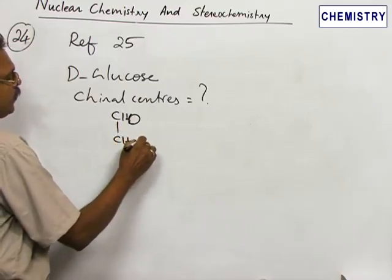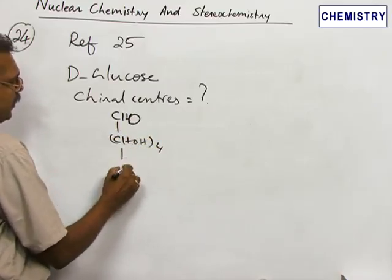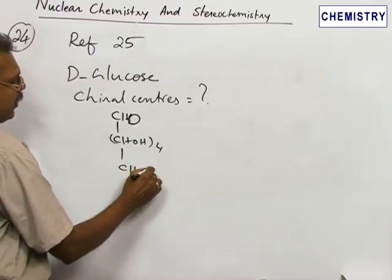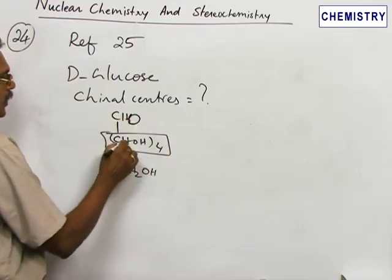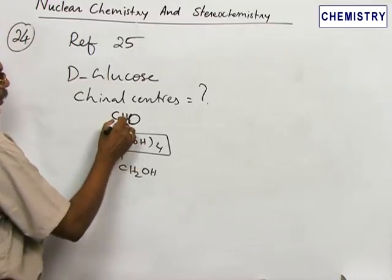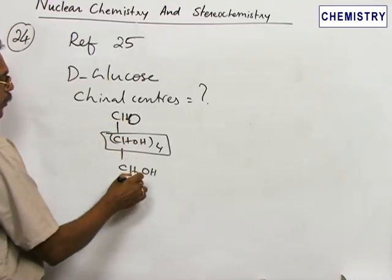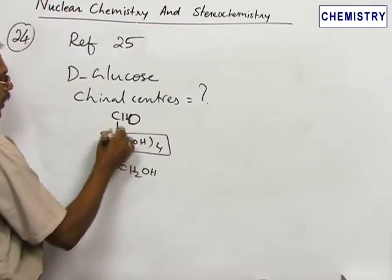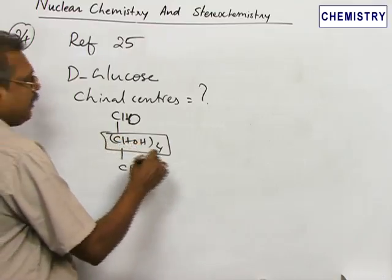This is followed by CHOH four times and one primary alcoholic group. These four carbons are chiral in nature. This is the aldehyde carbonyl carbon, and this is the primary alcoholic group carbon. The intervening four carbons are chiral in nature. Therefore,